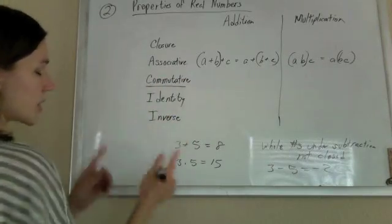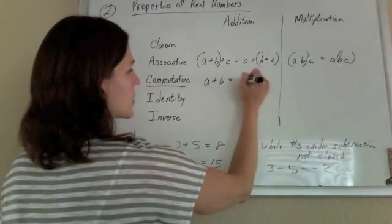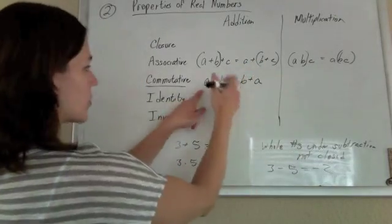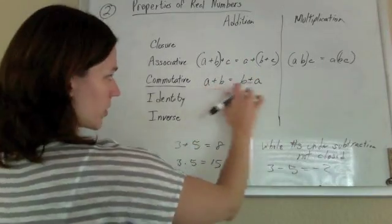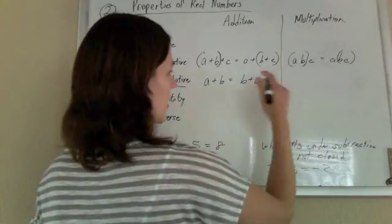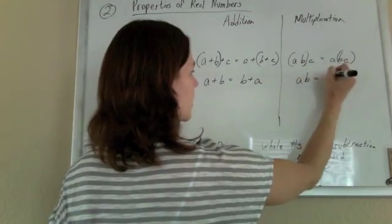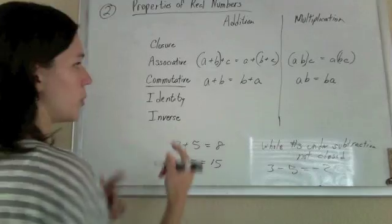Commutative property, the numbers commute. So A plus B is the same as B plus A. Those numbers commute. The order changes. And multiplication, same thing. A times B is the same as B times A. The numbers commute, they move.